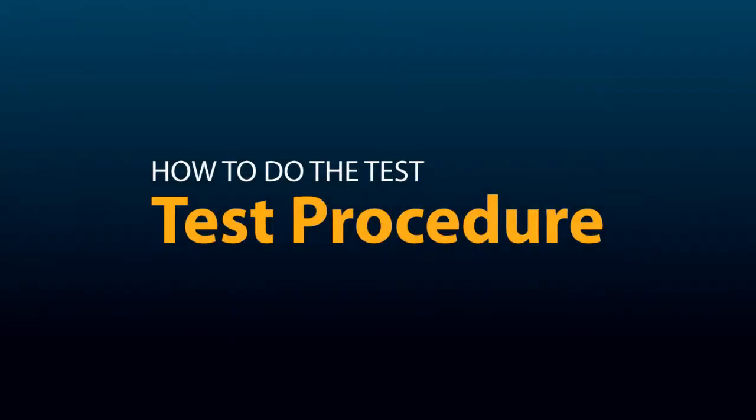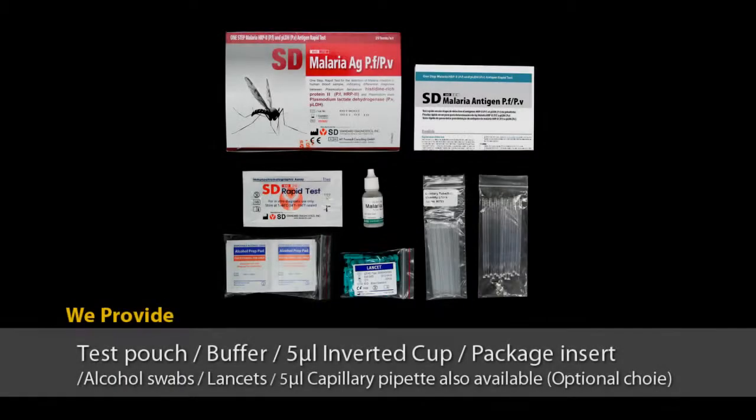SD BioLine malaria rapid test is easy to use. The materials included in the kit are test pouch, buffer, inverted cup, package insert. Alcohol swabs and lancets are optional materials. A capillary pipette is also available when required.